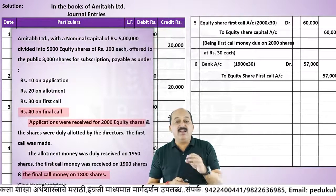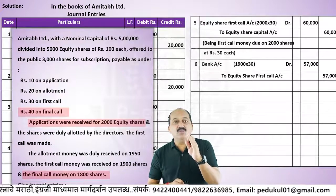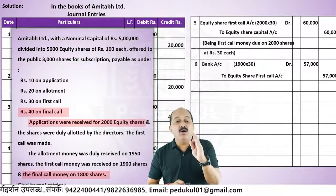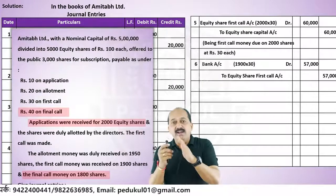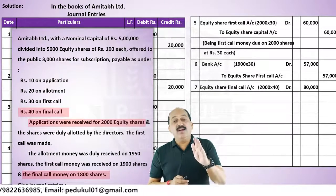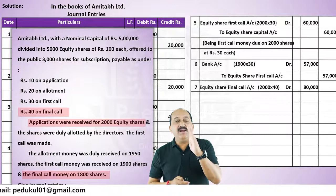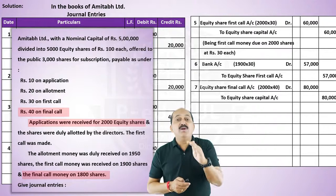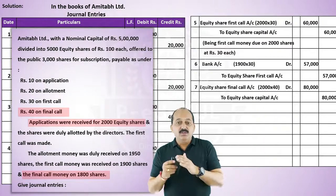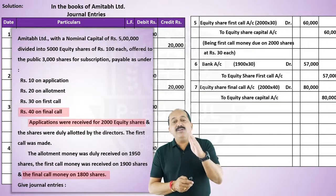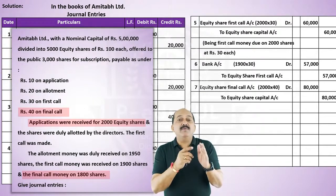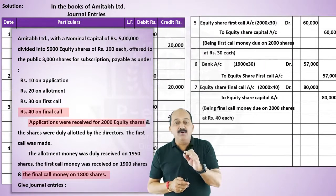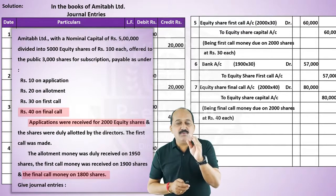Final call due on 2000 shares at Rs.40 per share। Entry: Equity Share Final Call Account debit - 2000 × 40 = 80,000 - to Equity Share Capital Account 80,000। Narration: Being final call money due on 2000 shares at Rs.40 each।